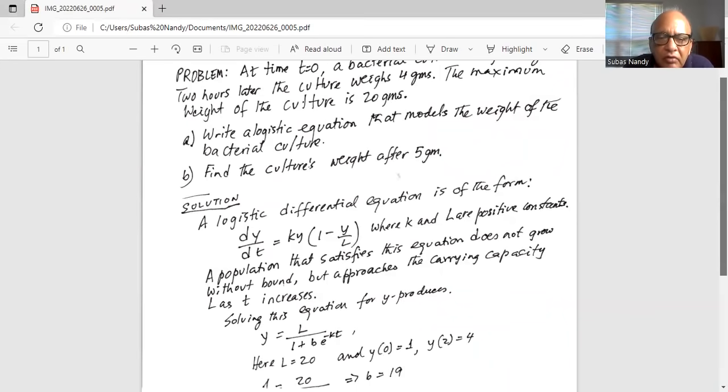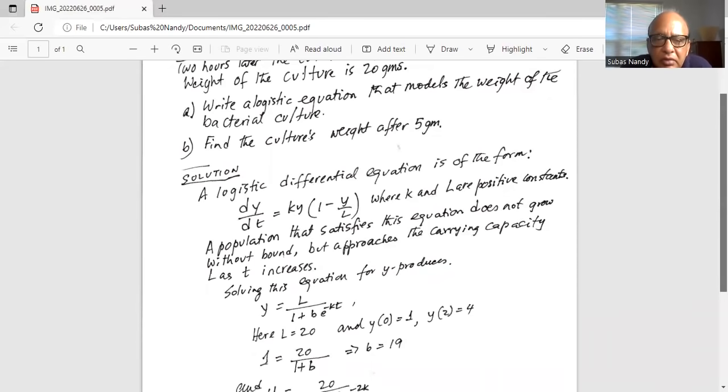Solving this equation for y produces y equals L divided by 1 plus b times e to the power of minus kt, where k, b, and L are all constants.